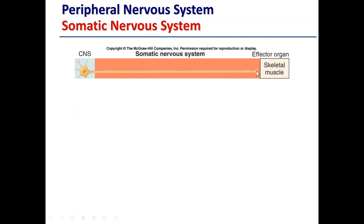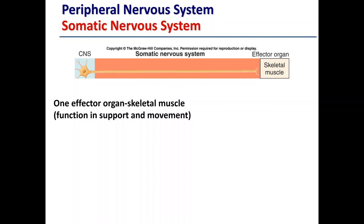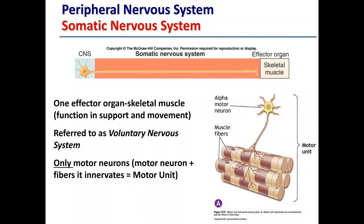The somatic nervous system has only one effector organ: skeletal muscle. The typical neuron structure includes dendrites, the soma or cell body, and a long axon projecting directly to skeletal muscle — making it a motor neuron. Its only function is the support of movement and it's often called the voluntary nervous system, because skeletal muscle contraction is typically voluntary. A motor neuron plus all the muscle fibers it innervates constitutes a single motor unit, and every time that neuron fires, all of those muscle fibers contract.